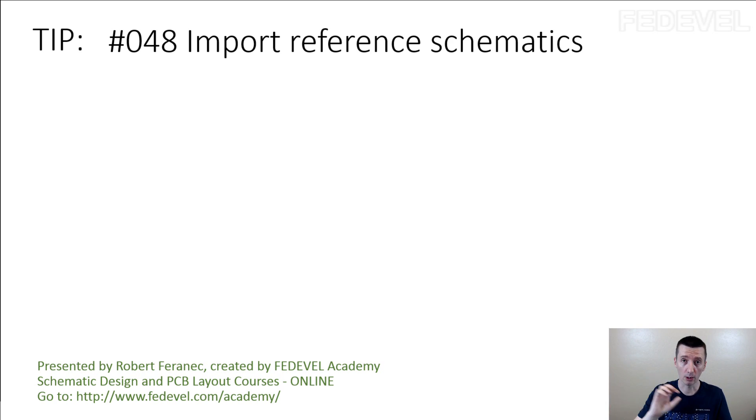When you redraw the schematic manually, for example from PDF, you can make mistakes. Again, we spoke about this kind of mistake like wrong net label or wrong connection or something like this. It can happen.